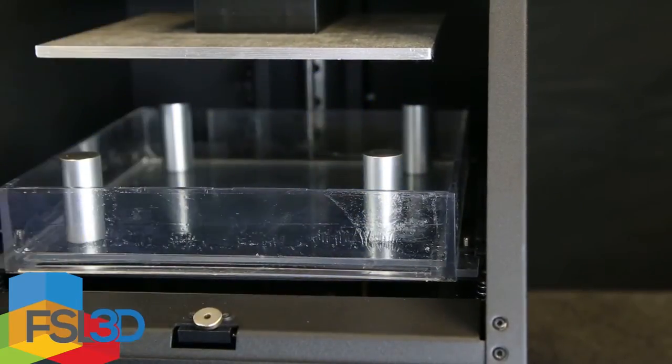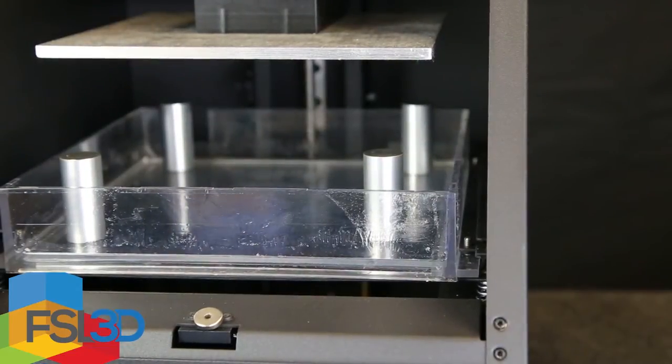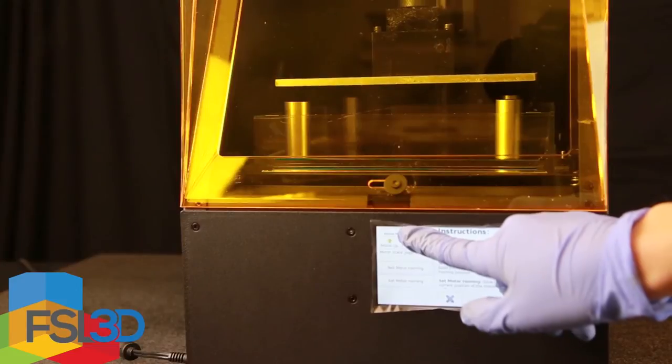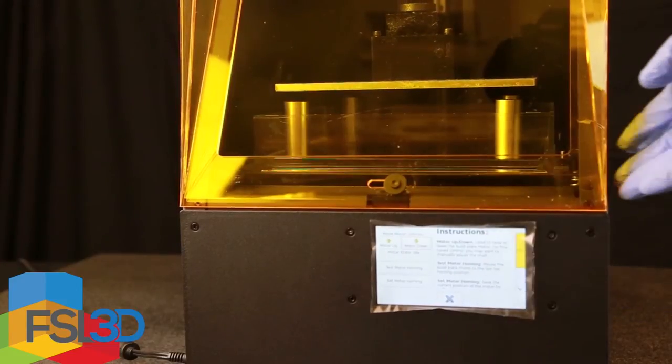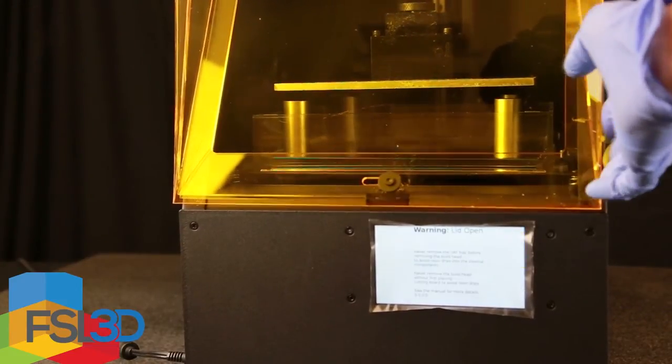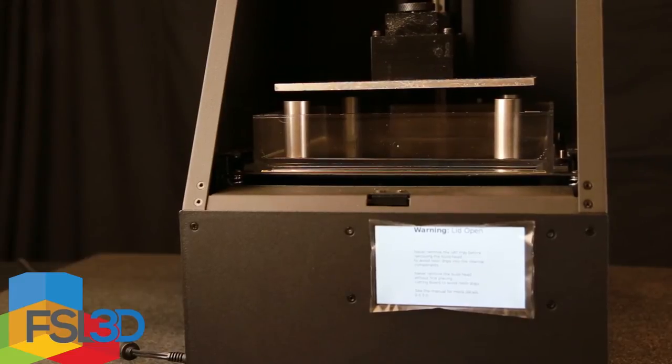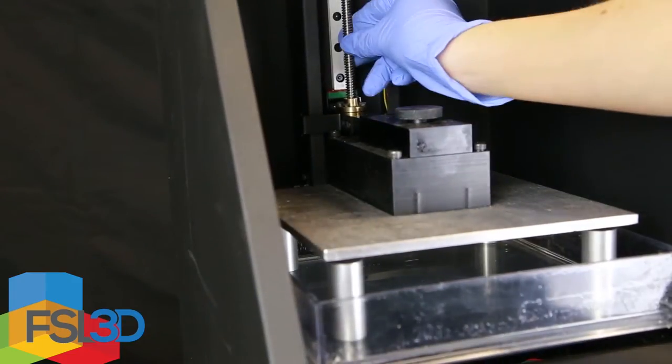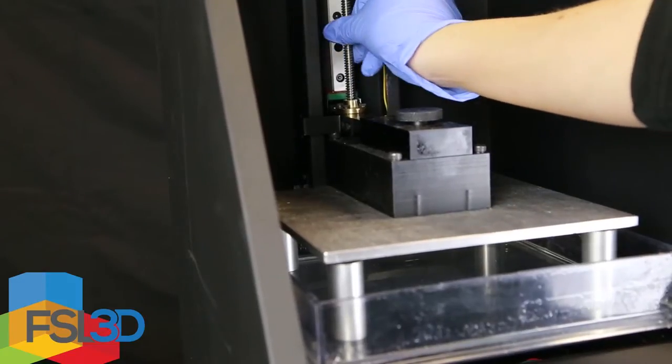Run the motor again until the plate almost touches the levelers. By using the threads in the back of the machine, move the plate down until it touches one of the levelers.